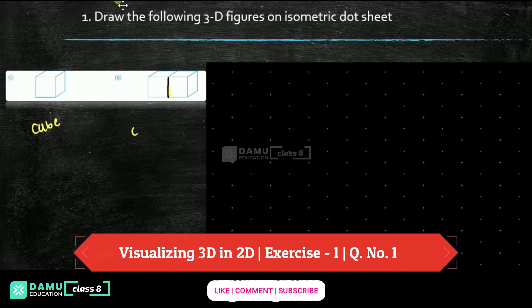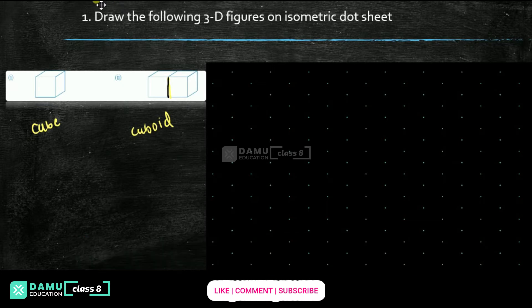This is a cuboid. While drawing on the isometric dot sheet, we have to remember two conditions: start at any corner, and one side will be inclined — making some angle. This front surface we need to draw in an inclined manner. Isometric means just making a 45-degree angle here.